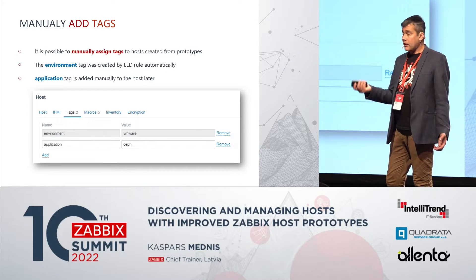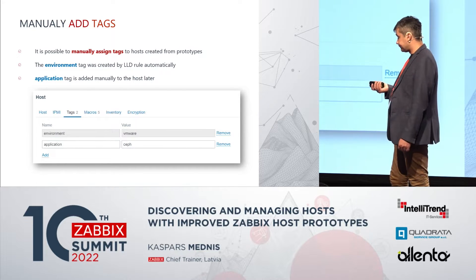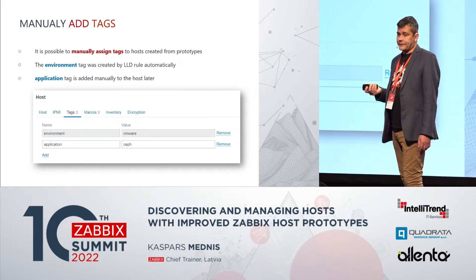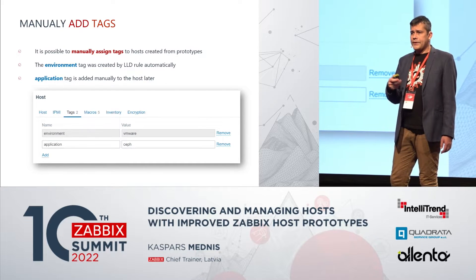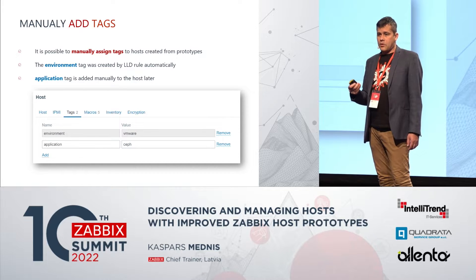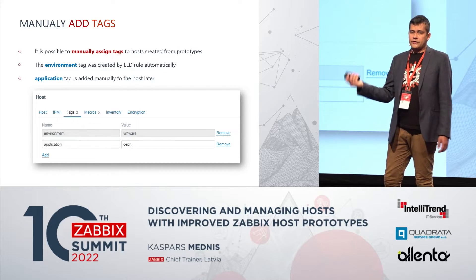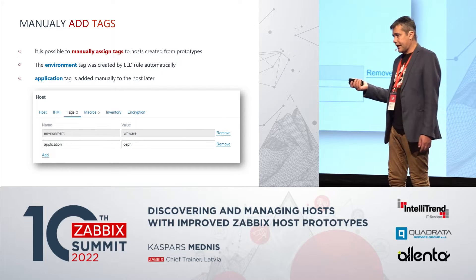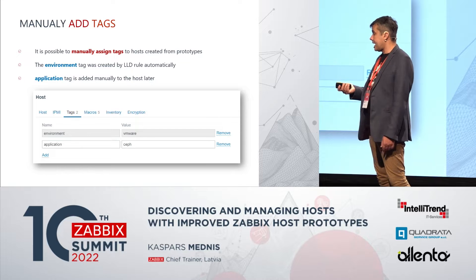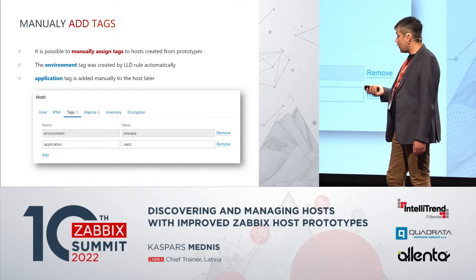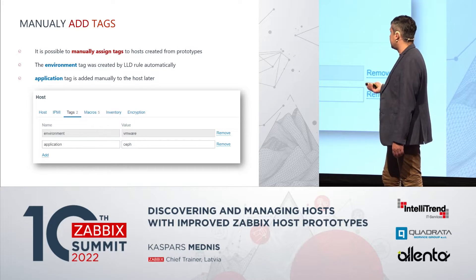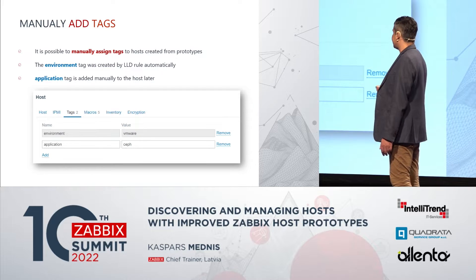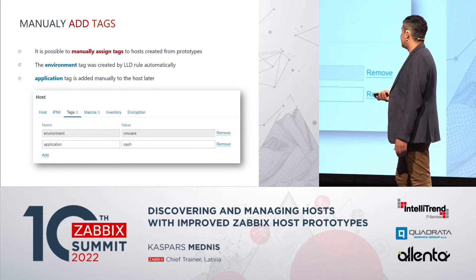You can also adjust tags. You can define some common tags at the prototype level, but after hosts are created you can add your own tags for specific machines. This is very important because with every new Zabbix version, tags are becoming more and more important — applications were replaced with tags, business services are fully based on tags. The grayed-out tag comes from the prototype, and the white one is something you added yourself.